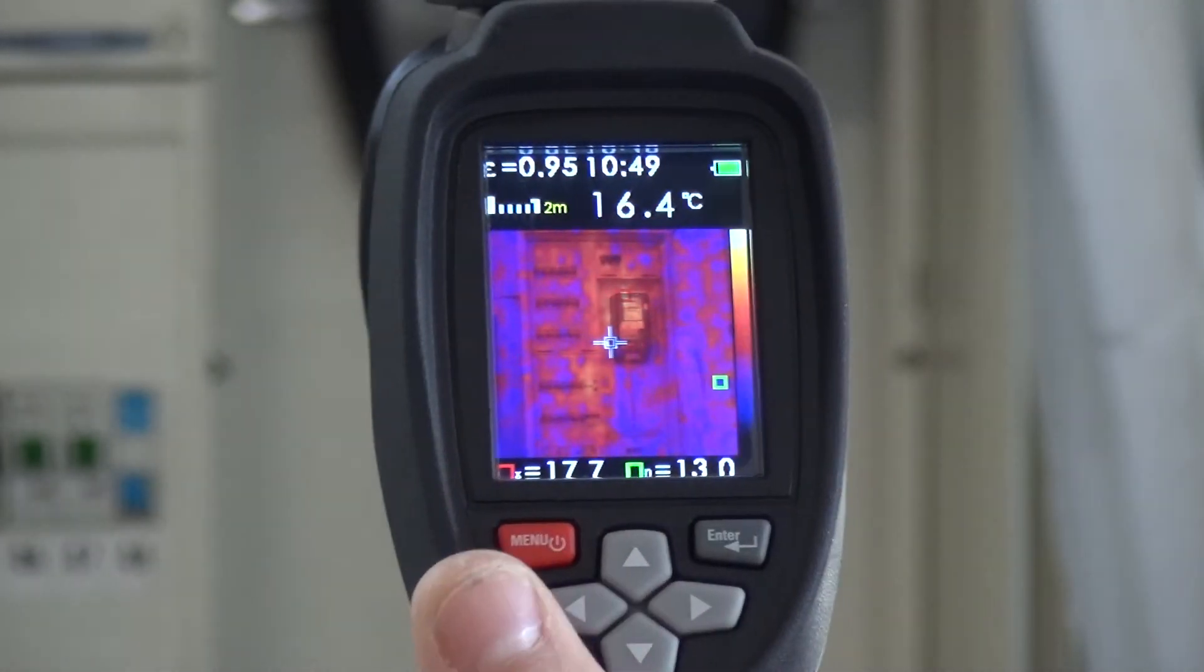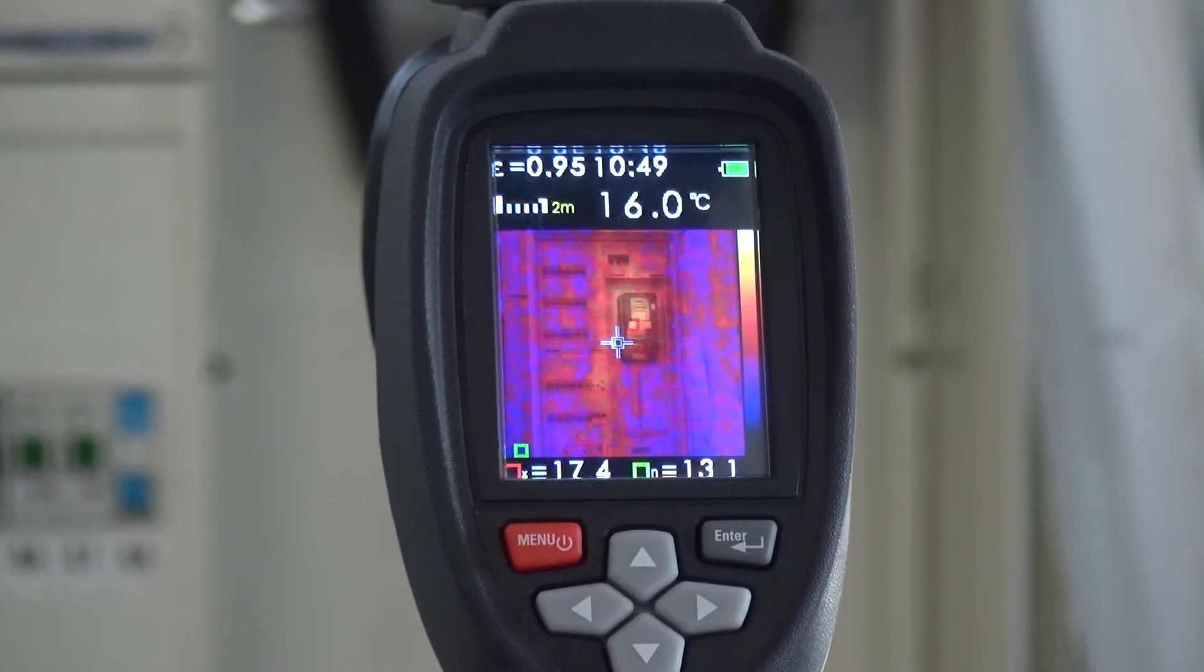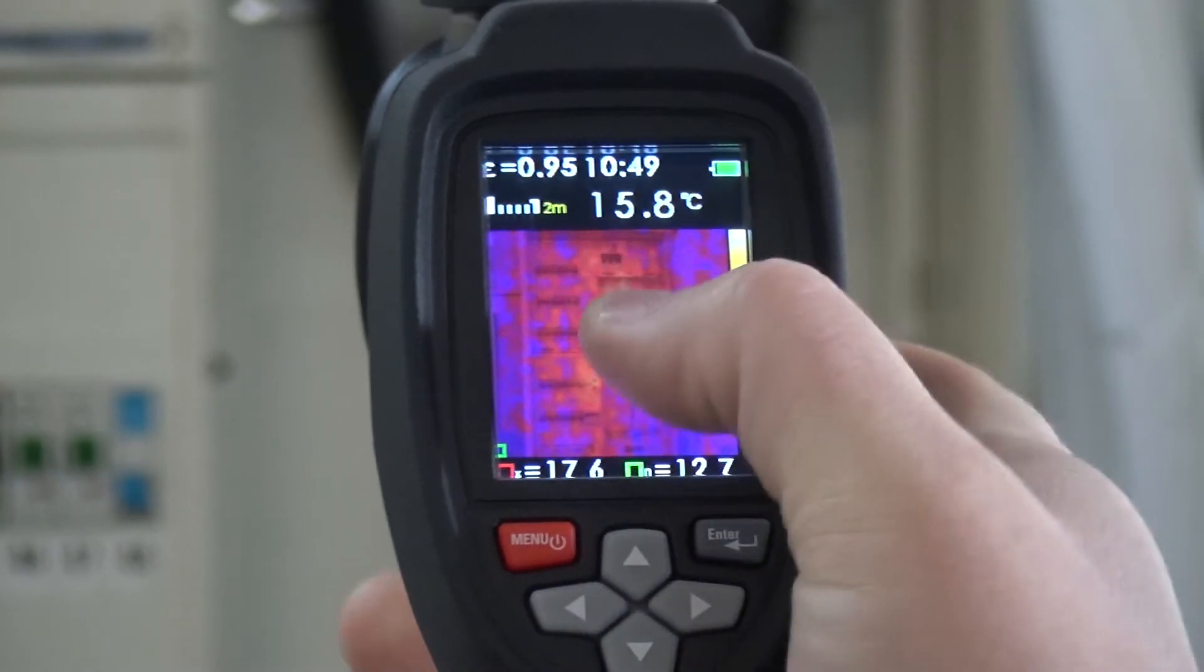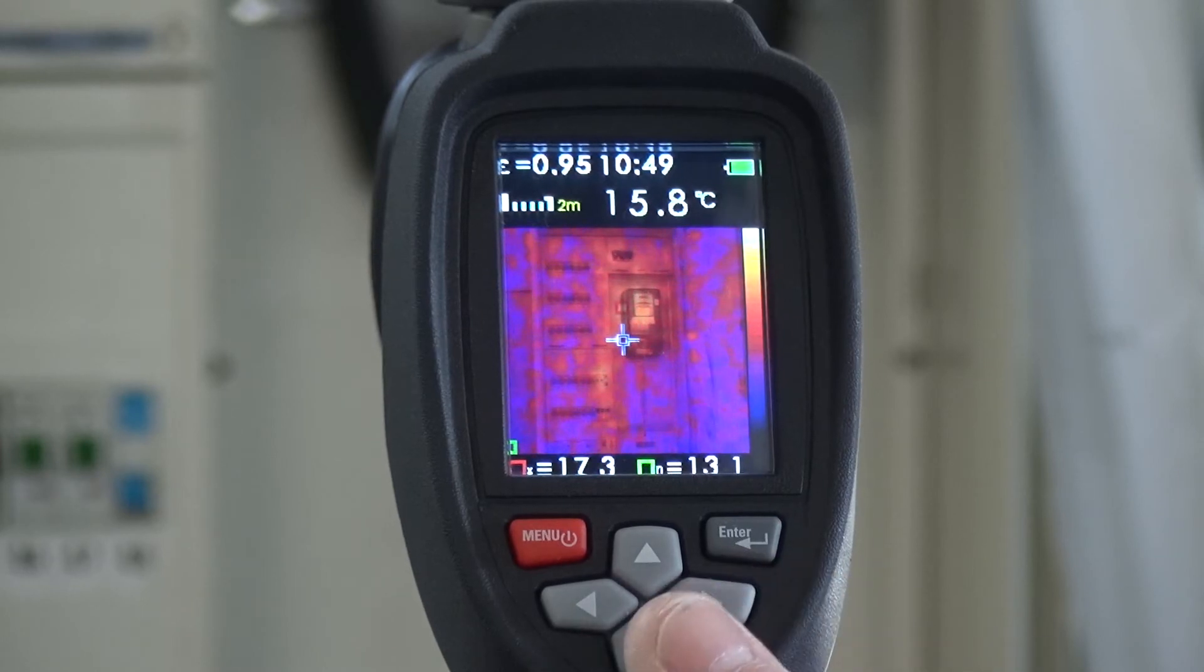And after we have set everything, then we see on our display a red and a green spot. The red spot tells us where the hottest location is, whereby the green spot tells us where the coldest location is.